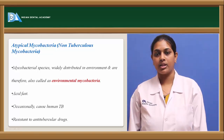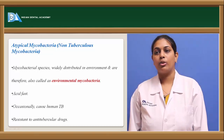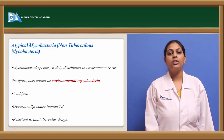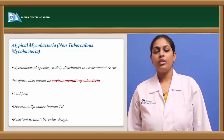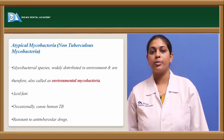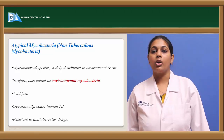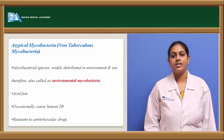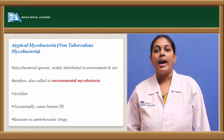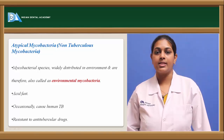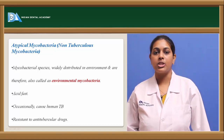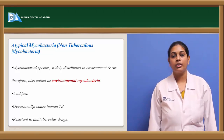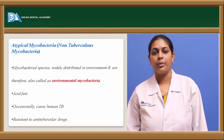Coming to atypical mycobacteria: there is a strain known as atypical mycobacterium, which is a non-tuberculosis mycobacterium. These bacteria are not as virulent as the classical tuberculosis species. They are widely distributed in the environment, also known as environmental mycobacteria. They are acid-fast, resisting acidity and not staining with regular procedures but only with acid-fast stains. They occasionally cause tuberculosis in human beings.